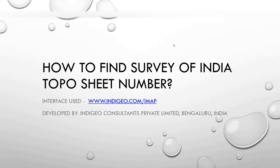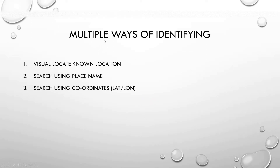Hello, Namaste. Today I'll be covering how to find Survey of India topo sheet numbers using IndiaGIS's IMAP interface. I'll be covering multiple ways of identifying them: one is the visual locate — zoom into a location on the base map if you know it; second, you can search the place name and then identify; and the third option is using the coordinates. Let's go to the IMAP.